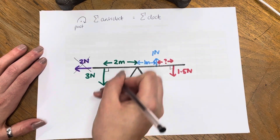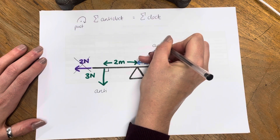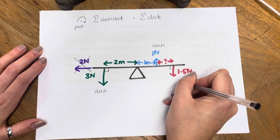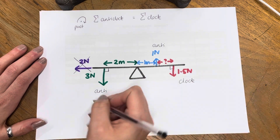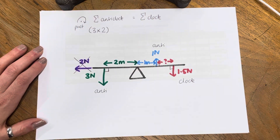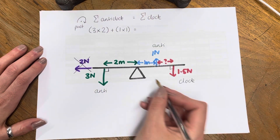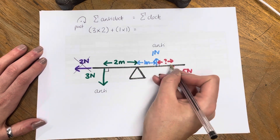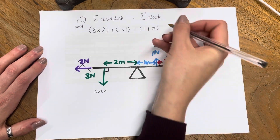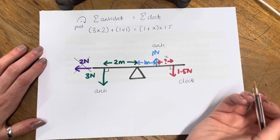This force is pushing down this way, so it is anticlockwise. This one is also anticlockwise because it's going up that way. And then this one is going around there — this is clockwise. So the anticlockwise moments: I've got 3 Newtons times 2 metres, plus the blue one which is 1 Newton times 1 metre, and that equals this distance — which is 1 plus X — multiplied by the force, which is 1.5.